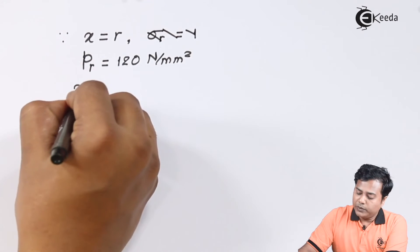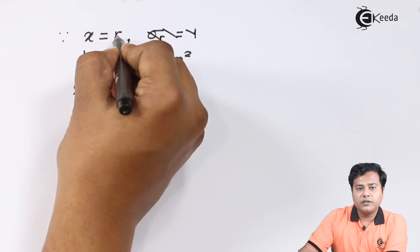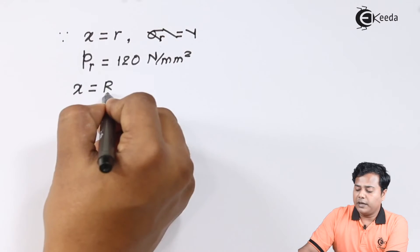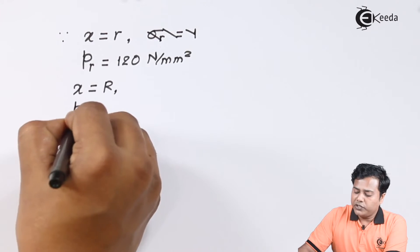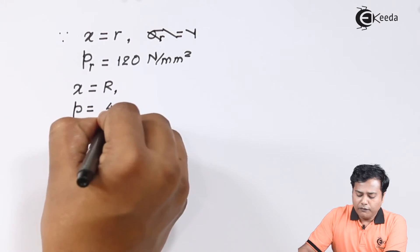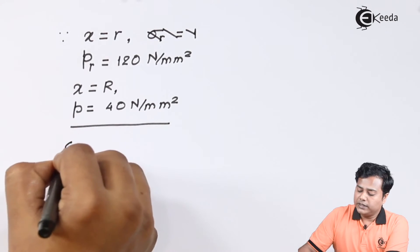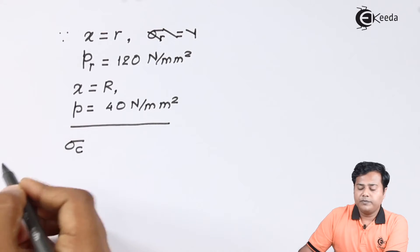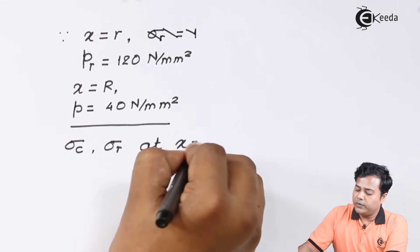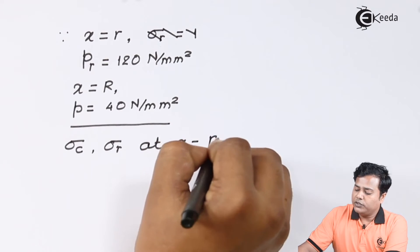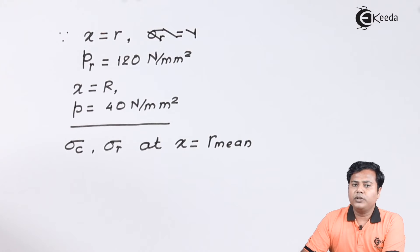At X equal to capital R, the outer radius, the pressure exerted is 40 Newton per mm square. We need to find Sigma C and Sigma R at X equal to R mean.